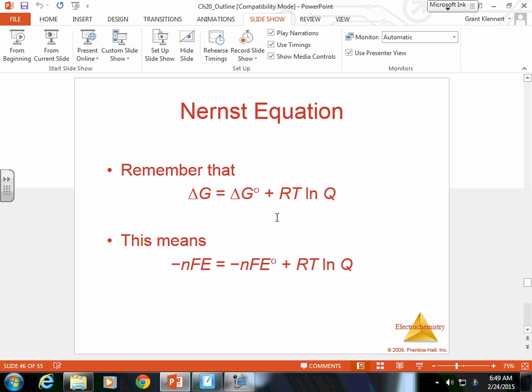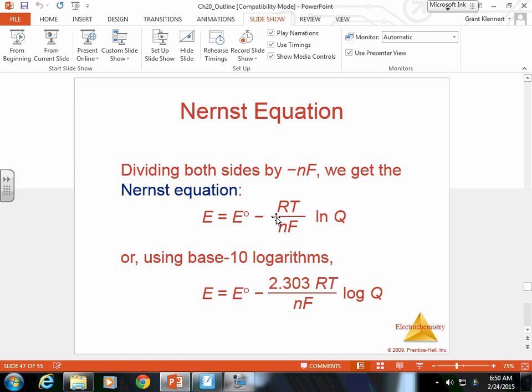We can rearrange this equation to get the Nernst equation. Remember that change in G is equal to change in G° plus RT natural log of Q. We're just going to substitute in nFE. When we substitute in nFE, we can use natural logarithms to figure out the energy in an equation based off of our free energy value. When everything's said and done, we can get E is equal to E° of the cell minus 2.303 times RT over nF times the log of Q.